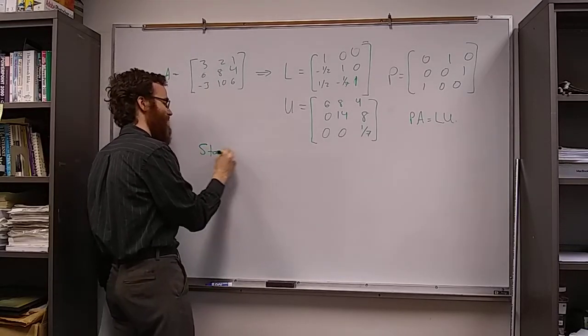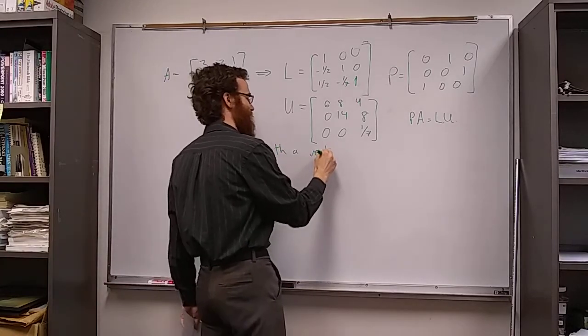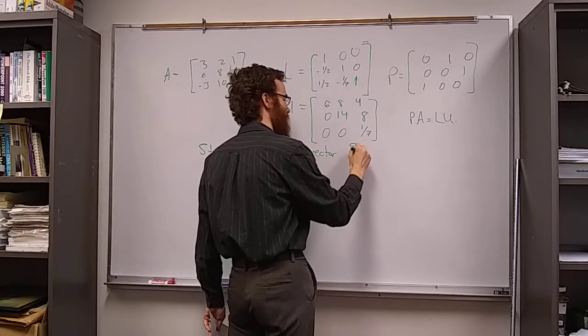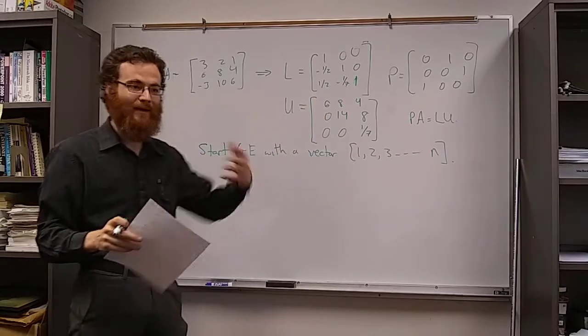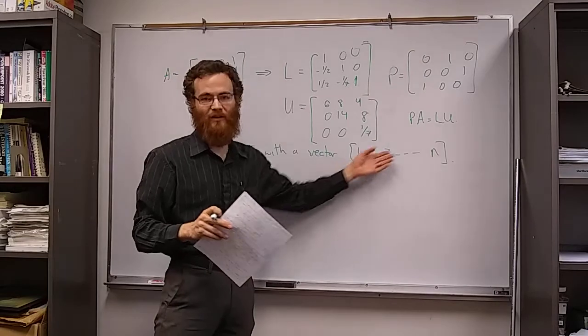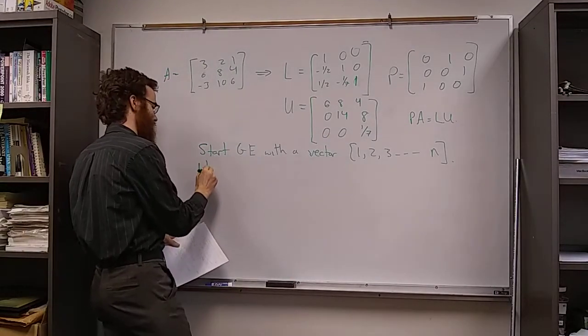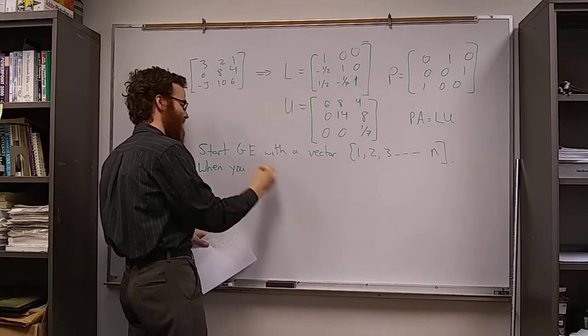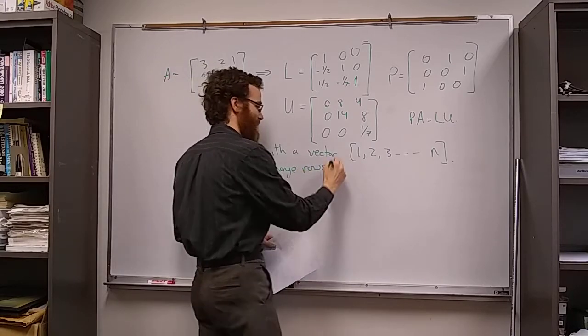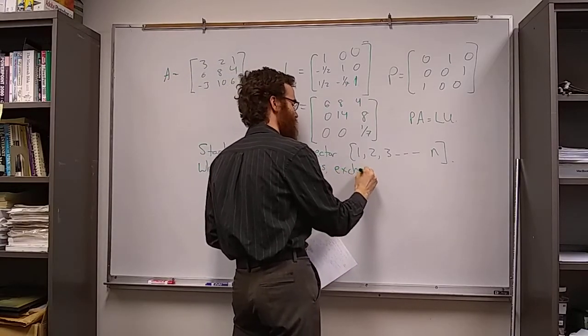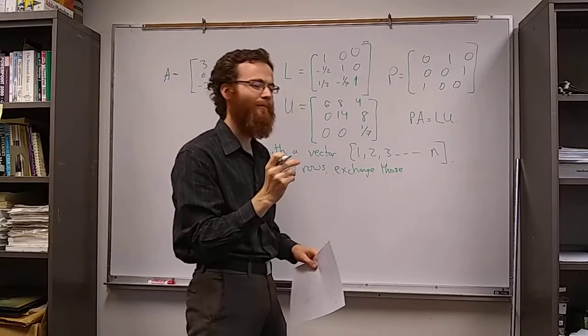The way to do it is like this: you start Gaussian elimination with a vector 1, 2, 3, all the way through n. So if your matrix is n by n, you start with the vector 1, 2, 3 through n. Now what you do is whenever you exchange rows, you exchange those entries...